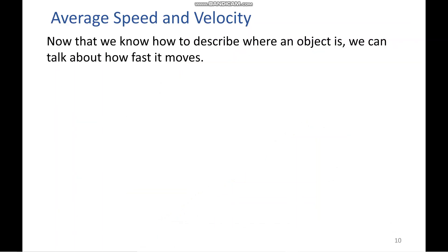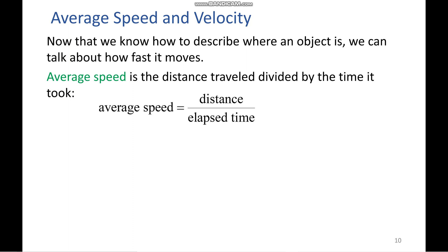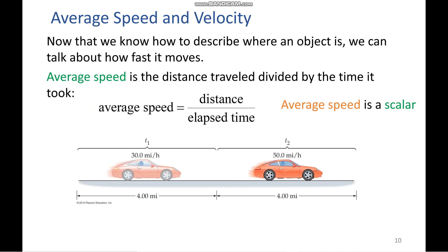All right. So, let's quickly cover average speed and velocity. We now know how to talk about motion. The next step is how fast that motion is. We define average speed as distance traveled divided by the time it took, and this value is a scalar. So, let's look at the diagram. Some might say that the average speed here at first glance is 40 miles an hour, but is that the correct assumption? Let's work it out.